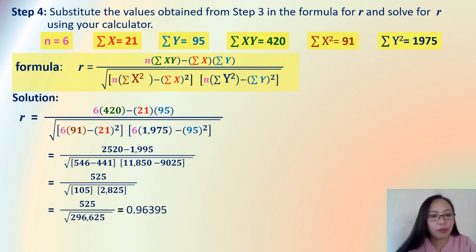The next step, we multiply the denominator. We have 525 over the square root of 105 times 2,825. This is 296,625. And then, we take the square root of this denominator. Then, later on, we divide 525 divided by the square root of 296,625. You have the final answer, 0.96395.